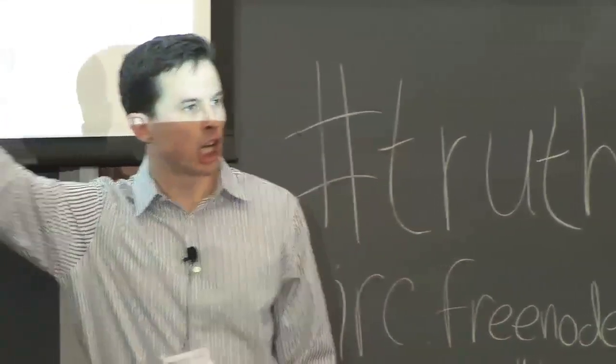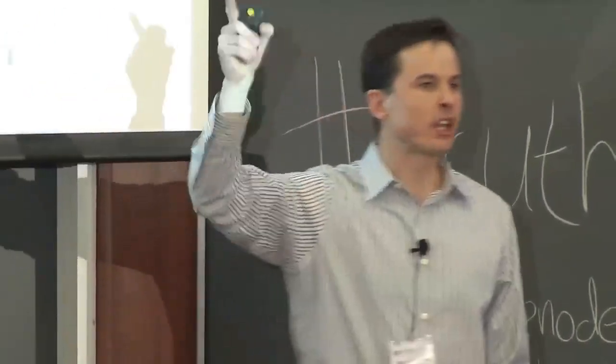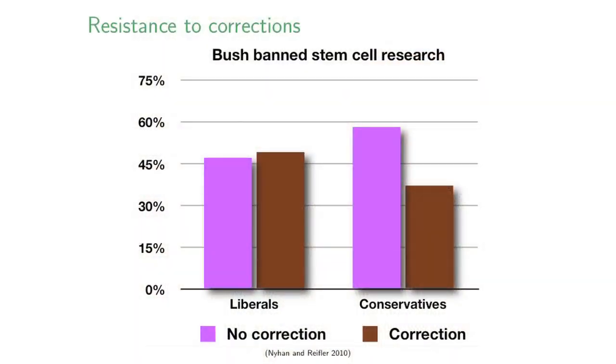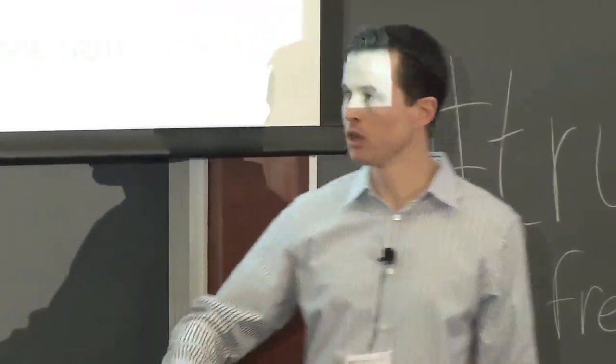This is a claim that was made by John Kerry and John Edwards in 2004. They made statements suggesting that President Bush had banned all stem cell research in this country. That is not true. He banned, he limited federal funding to pre-existing stem cell lines. But the language that was used implied that there was a complete ban on stem cell research. So we exposed subjects to a mock news article about this claim and gave them a correction.